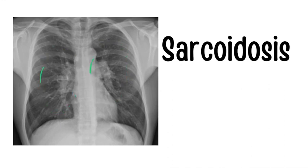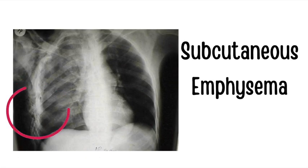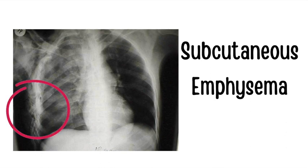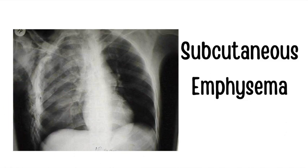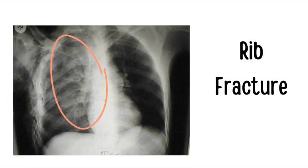This image shows subcutaneous emphysema — gas or air within the subcutaneous tissues. It has many causes such as trauma, pneumothorax, esophageal rupture, or a very high yield gas-producing organism. If you know which organism that is, leave it in the comments — it's extremely high yield and practically always tested.